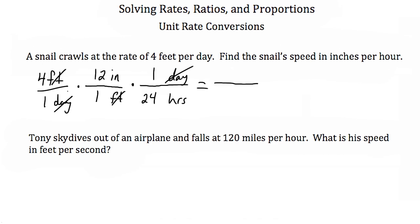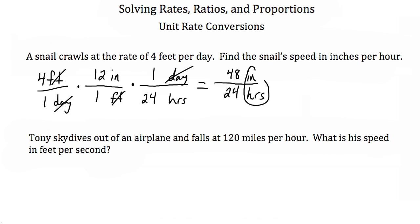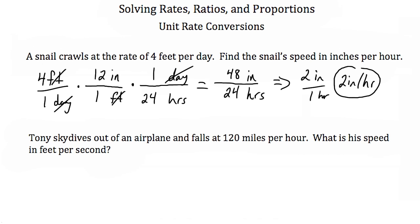So we have 4 times 12 times 1 on top, which is 48 inches. On the bottom we have 1 times 1 times 24, which is 24 hours. Our rate is in inches per hour. Simplifying 48 over 24 gives us 2 inches for every 1 hour, or 2 inches per hour. So a snail crawling at 4 feet per day is also crawling at 2 inches per hour.